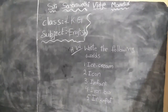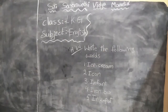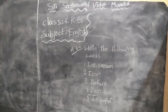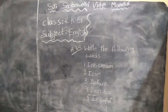Okay children, write the following words. First one: ice cream. Next one: icon. Infant. Iron box. Ink pot. Okay, now children, your five words are ready.